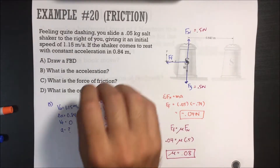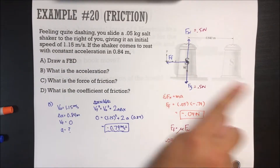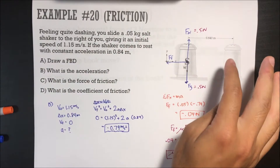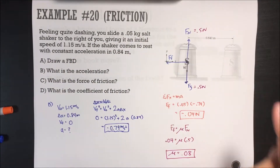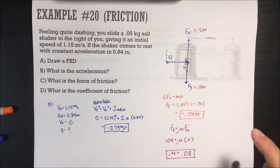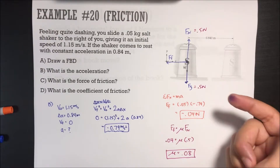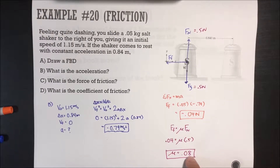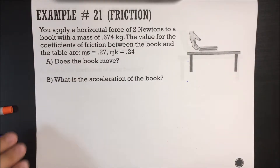Important things to know: when something is just sliding, there's no force applied pushing it — it's just moving in that direction, so there's only a force of friction. The acceleration is negative because friction slows it down. The coefficient of friction has no units. Now let's do some more friction problems.